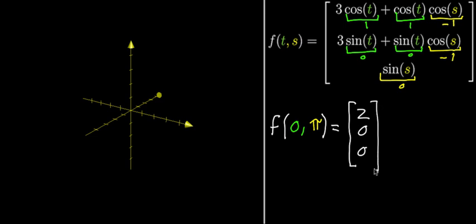So what that would mean is that this output is gonna be the point that's two along the x-axis, and there's nothing else to it. It's just two along the x-axis. So we'll go ahead and move the graph about, add that point there. So that's what would correspond to this one particular input, zero and pi.